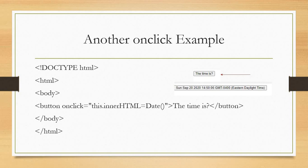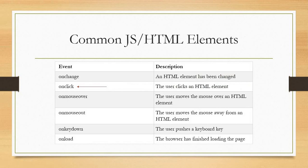Here's another example. However, this time we're creating a change within the element — so when you click this button, it gives our date information as a button. Here are some common JavaScript elements that can be used within HTML: on-change, on-click (which we've covered at length), on-mouse-over, on-mouse-out, on-keydown, and on-load.